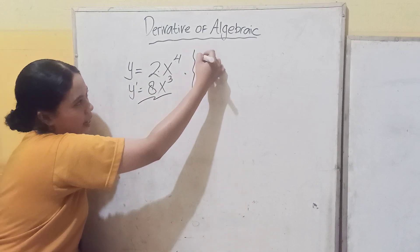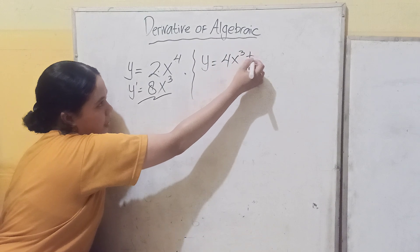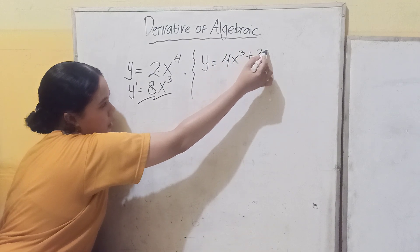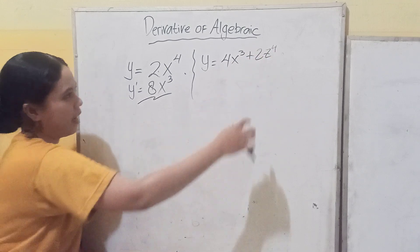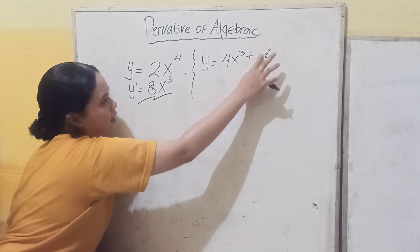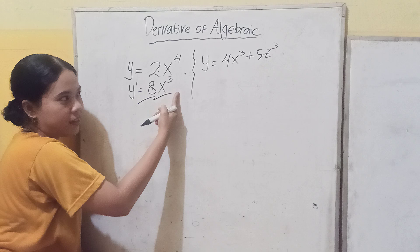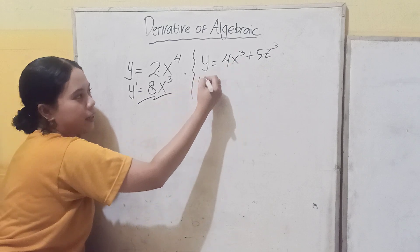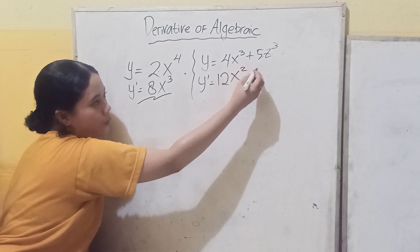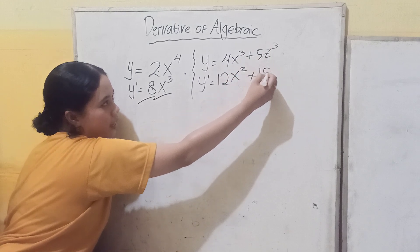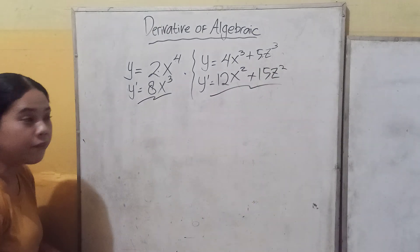The next example: y equals 4x to the power of 3 plus 5z to the power of 3. To find the derivative: 4 times 3 is 12, so 12x to the power of 2, then plus 3 times 5 is 15, so 15z to the power of 2. Very simple!